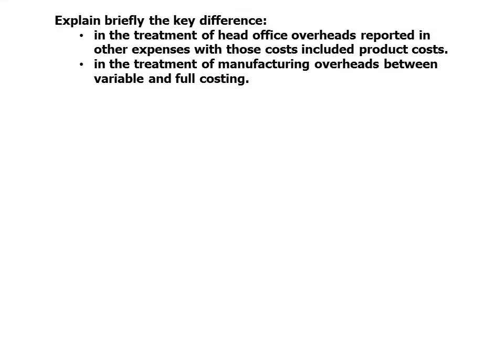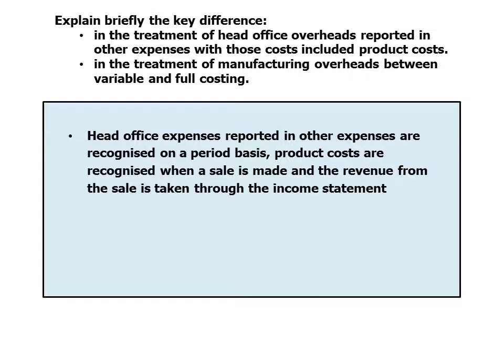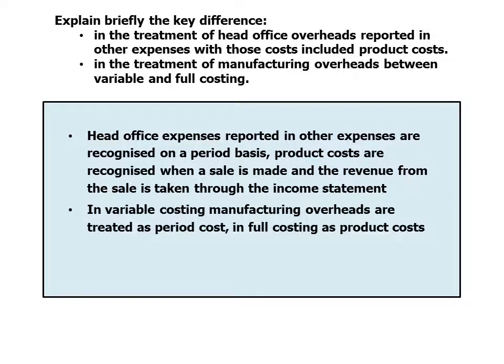Explain briefly the key difference in the treatment of head office overheads reported in other expenses with those costs included in product costs, and the key difference in the treatment of manufacturing overheads between variable and full costing. Head office expenses reported in other expenses are recognised on a period basis. Product costs are recognised when a sale is made and the revenue from the sale is taken through the income statement. In variable costing, manufacturing overheads are treated as a period cost; in full costing, as product costs.